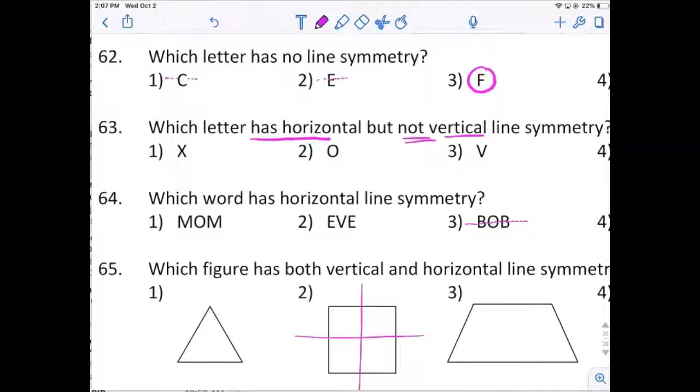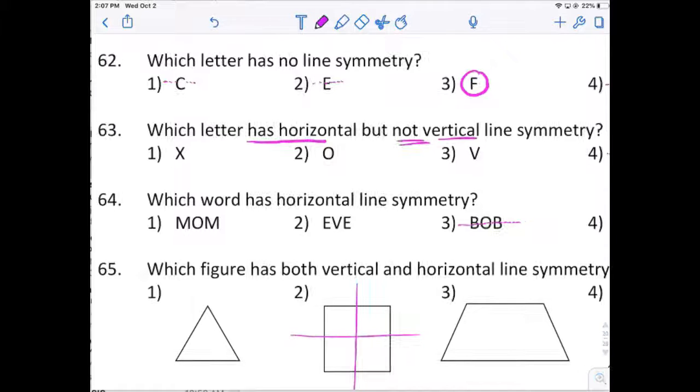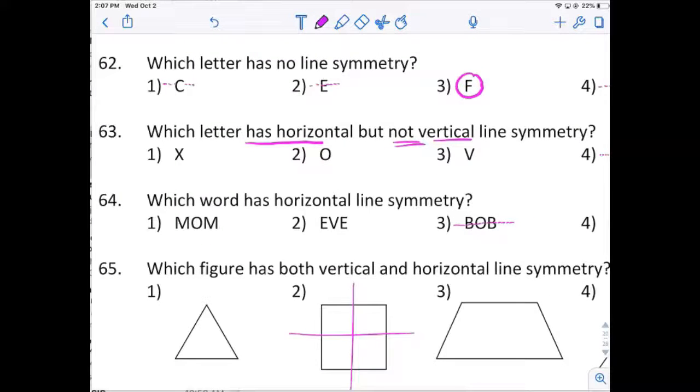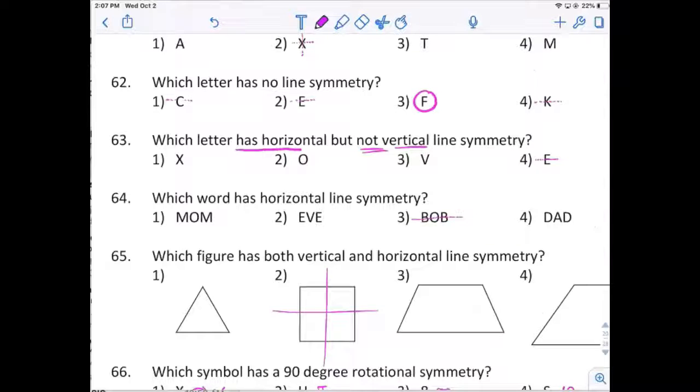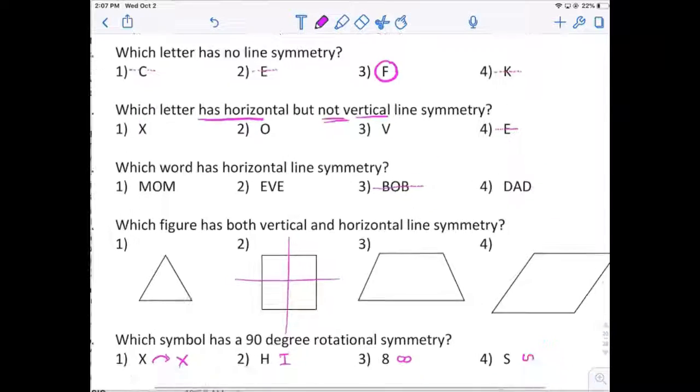64. Which word has horizontal line symmetry? You could fold Bob upward or downward, and it would line up. 65. Which shape has both vertical and horizontal? That would be just the square or rectangle, number 2.